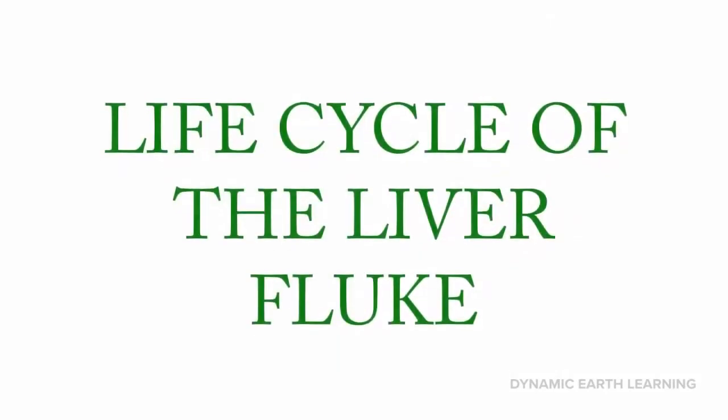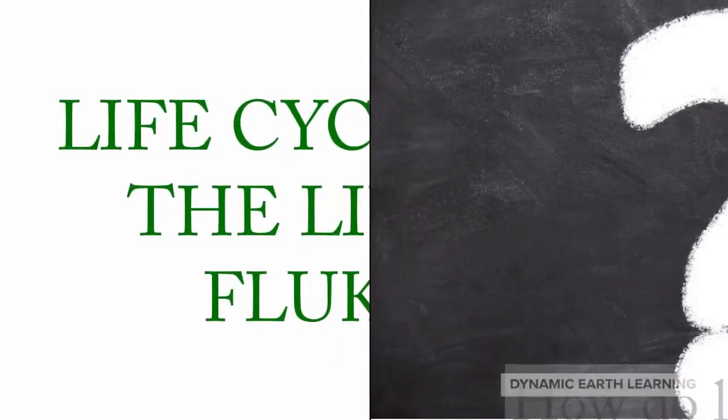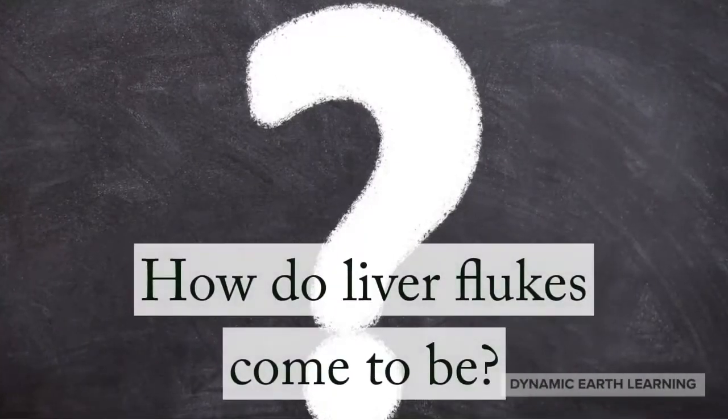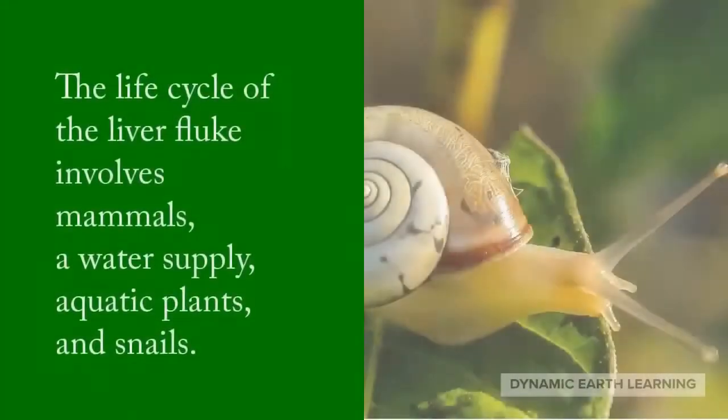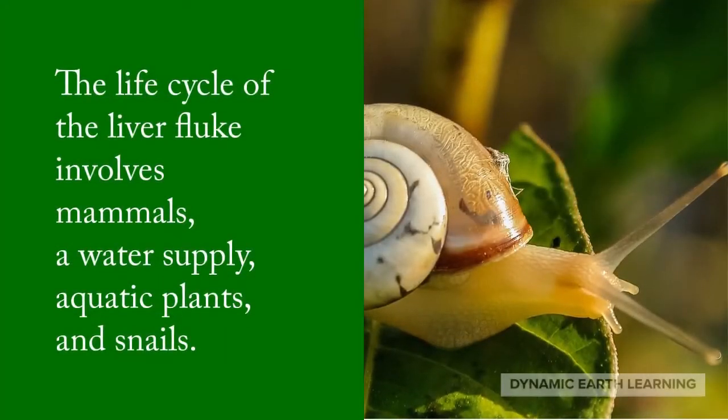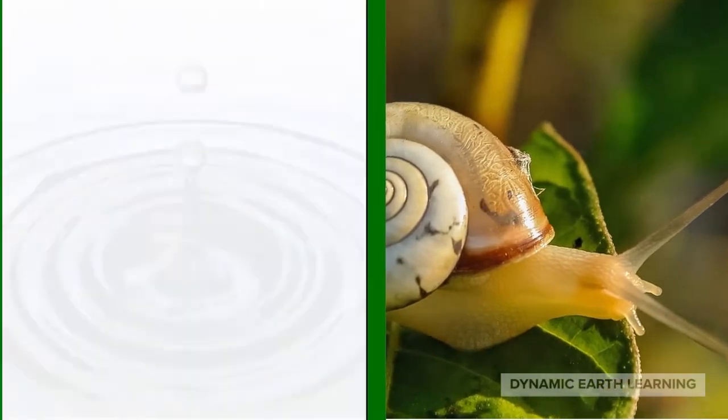The life cycle of the liver fluke: how do liver flukes come to be? The life cycle of the liver fluke involves mammals, a water supply, aquatic plants, and snails. It requires two or more different hosts and has a free-living larval stage in water.